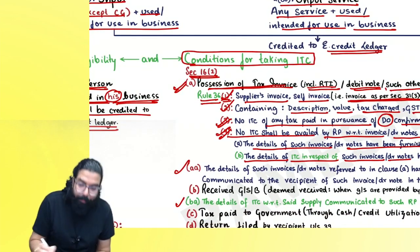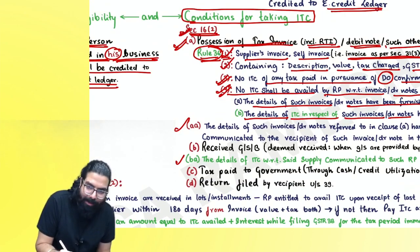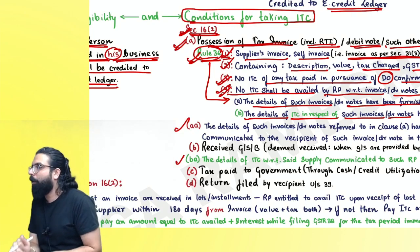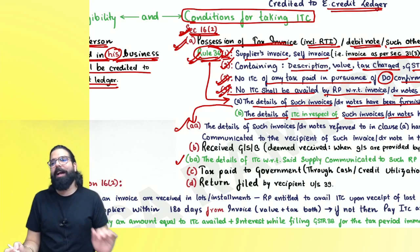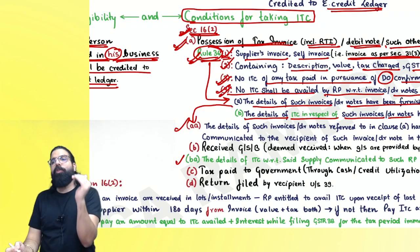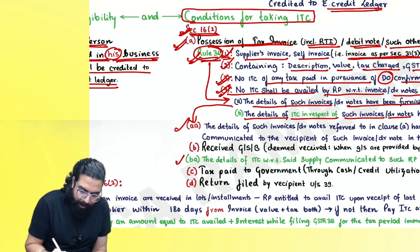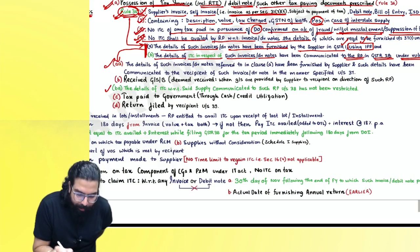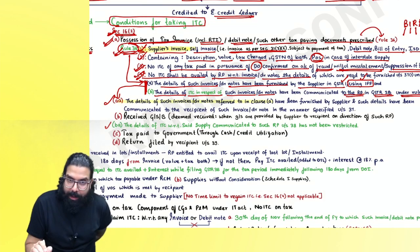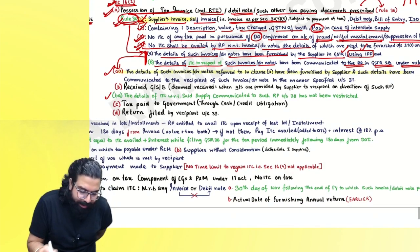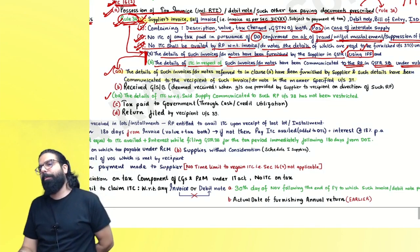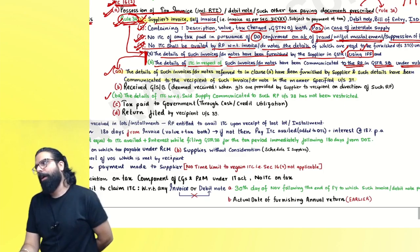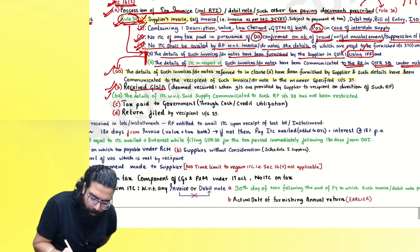Section 16 is the Act; Rule 36 is the rule. The rule said the invoice amount should appear in GSTR-1 and come in GSTR-2B. Clause AA gives the Act its backing — same thing is written: details of invoice/debit note referred in clause (a) should be furnished by the supplier and communicated to the recipient under Section 37, meaning it must appear in GSTR-2B.